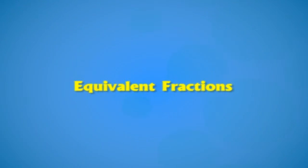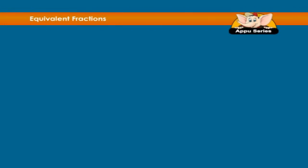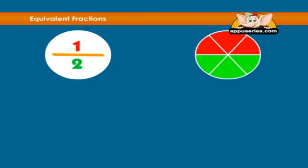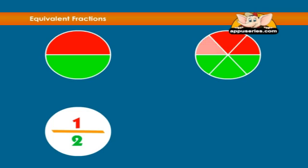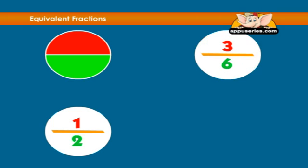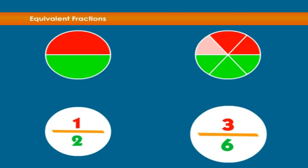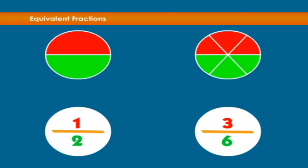Equivalent Fractions. Check out the two circles. We see in the first circle half is red and in the second circle three-sixths is red. But do you notice that the same amount is red on both the circles? So half must be the same amount as three-sixths.